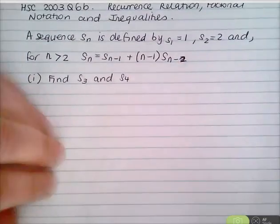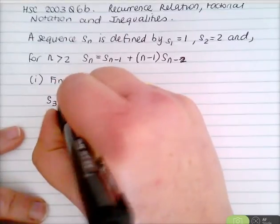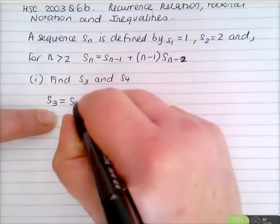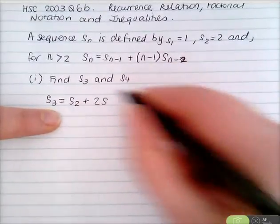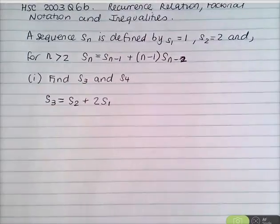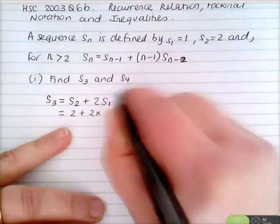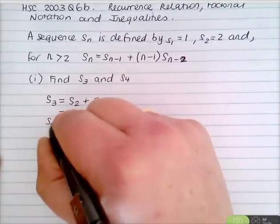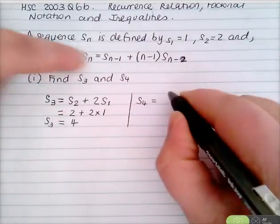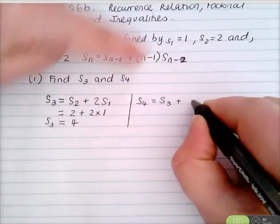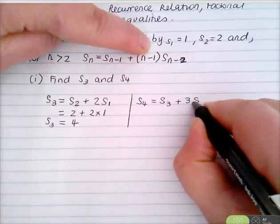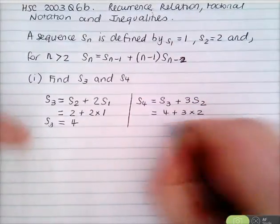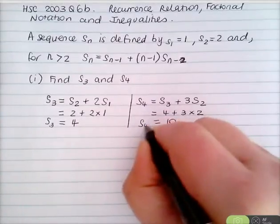First, find S₃ and S₄. S₃ = S₂ + (3−1)·S₁ = 2 + 2·1 = 4. S₄ = S₃ + (4−1)·S₂ = 4 + 3·2 = 4 + 6 = 10.